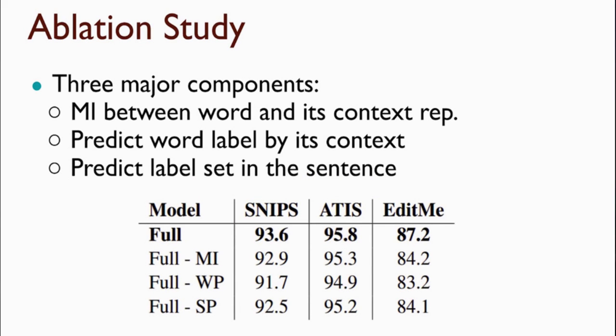To evaluate the contribution of the different subtasks, we conduct an ablation study. We have three major subtasks: first, using mutual information to increase consistency between word and context representations; second, prediction of the word label using only its context; and third, predicting the set of labels in the sentence via multi-label classification. All three components are necessary, and removing any one of them hurts performance. Among the three, label prediction has the most contribution, indicating its importance across all three datasets.